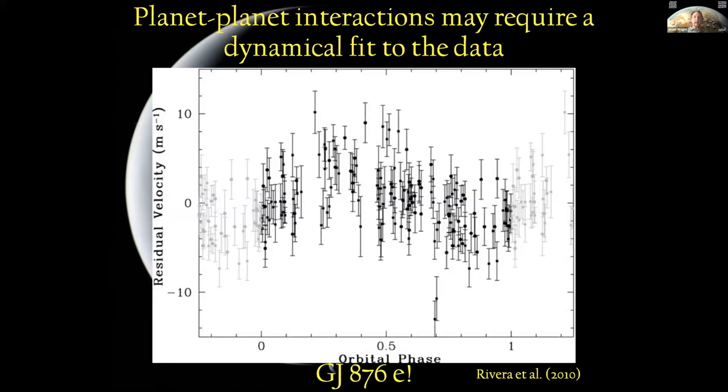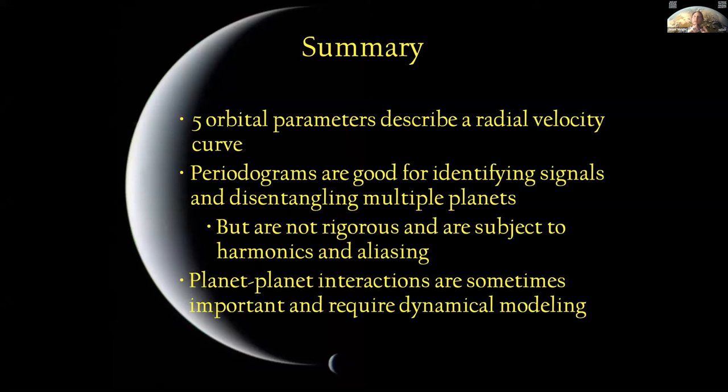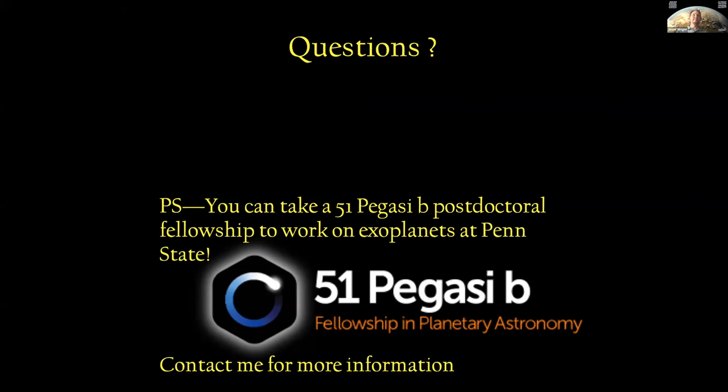So in summary, there are five orbital parameters that describe an RV curve plus one per telescope. Periodograms are wonderful exploratory heuristic tools for identifying signals and disentangling multiple planets because they stand out cleanly in Fourier space, or this approximation of it. But they are not rigorous. They're subject to harmonics. They're subject to aliasing. You can't really trust the false alarm probabilities you infer from them. You have to do a lot more work. And finally, planet-planet interactions are sometimes important and require dynamical modeling.